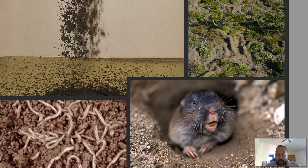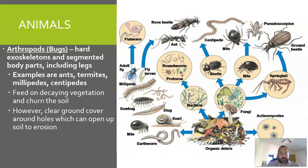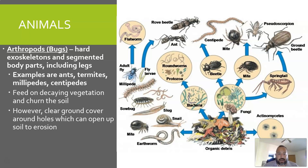Here are some examples of different critters in the soil — earthworms on the left, a vertebrate on the right, and diagrams showing how they change the soil as they move around. In terms of arthropods — bugs and insects with hard exoskeletons and segmented body parts including legs — we're talking ants, termites, millipedes, centipedes, and beetles. These feed on decaying vegetation and churn the soil.